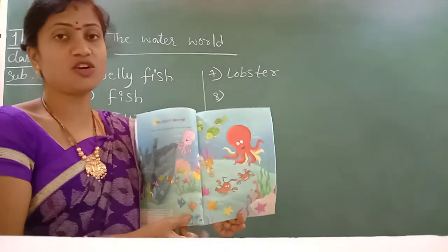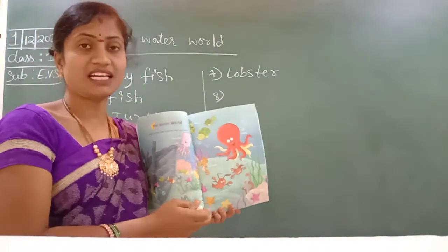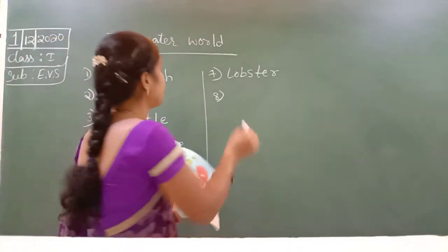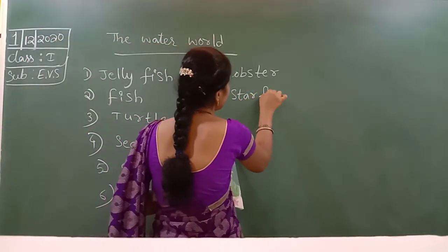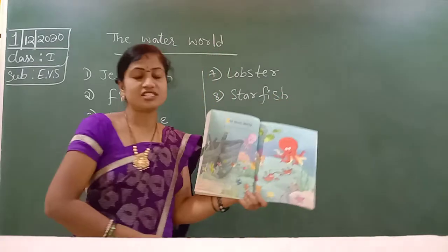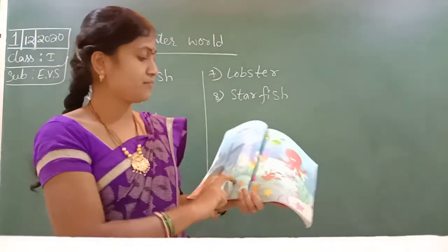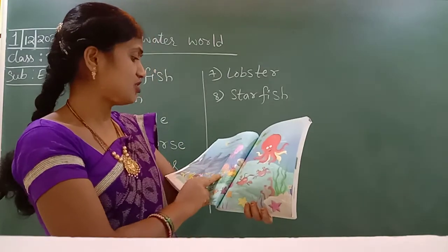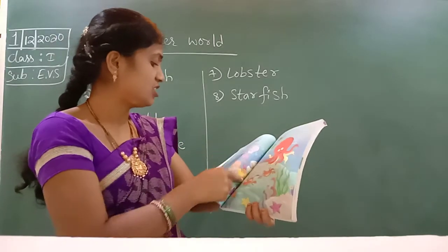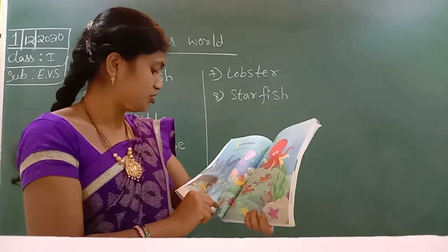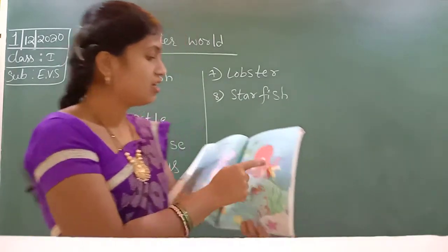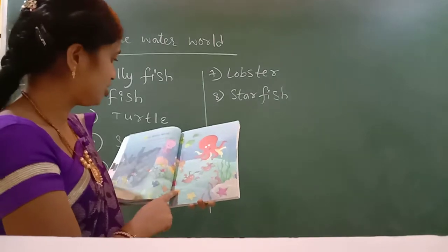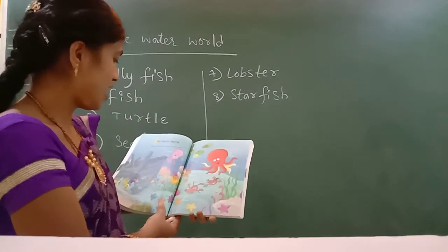Starfish. It looks like a star but it is a fish, that's why it got the name starfish. S-C-A-R, starfish. So yet only have — once you have to count: one, two, three, four, five, six, seven. Yet only have.